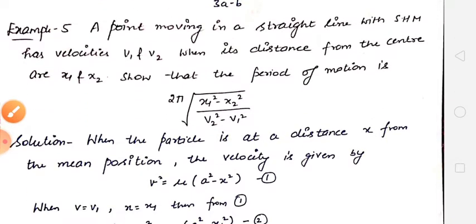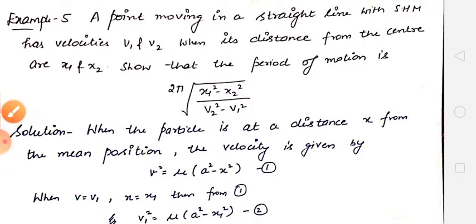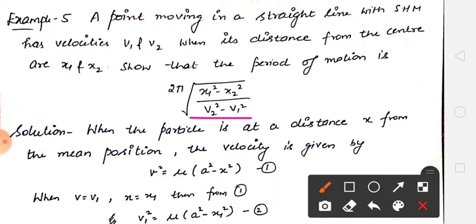Next example: A point moves in a straight line with simple harmonic motion. It has velocities v1 and v2 when its distances from the center are x1 and x2. Show that period of motion is 2π·√[(x1² - x2²) / (v2² - v1²)]. हमें time period निकालना है। हमें यह given है — particle simple harmonic motion execute कर रहा है और particle की velocities v1, v2 given हैं जब particle का distance center से x1 and x2 है।